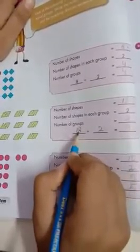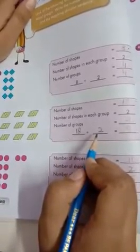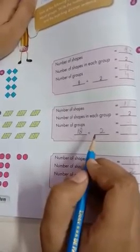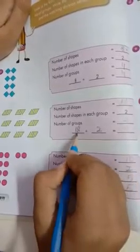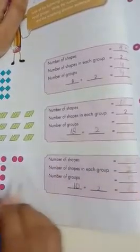How many times are in two tables? Count it. Two ones are two, two twos are four, two threes are six, two fours are eight, two fives are ten, two sixes are twelve, two sevens are fourteen, two eights are sixteen, two nines are eighteen. How many times have come? Nine times have come. Here, we have written 9.